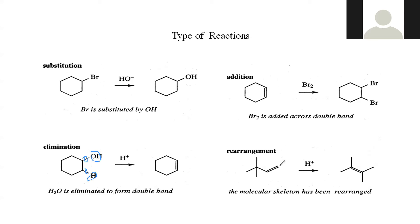For rearrangement reaction, some groups are rearranged — the molecular skeleton is rearranged. For example, a double bond changes position, and a methyl group attached here moves from one point to another. Those are the different types of reactions, but specifically we are going to look at the substitution reaction.